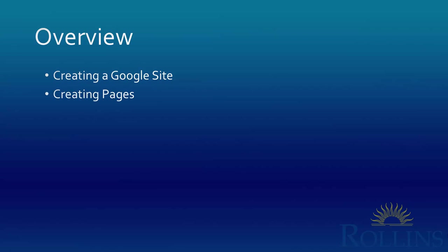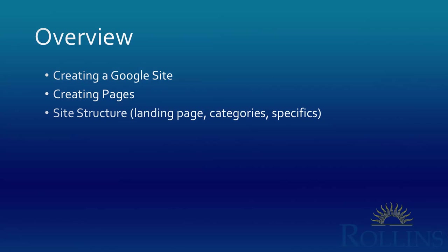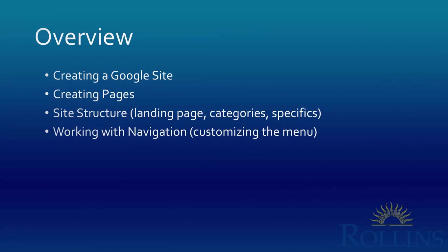We'll talk about creating pages within Google Sites, or sub pages within the main site. We'll talk about site structure, which is the main landing page, as well as categories of pages that you'll have in there and then creating specific pages within those categories. And then we'll talk about how to work with navigation — once you have a bunch of pages, how do you actually get to them? That will in large part be about creating a menu bar and adjusting and customizing that menu bar.